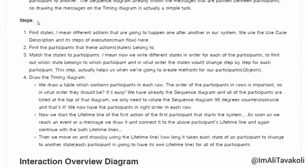Now, what are the steps? The first step is to find states — different actions that are going to happen one after another in our system. We can use the Use Case Description and its main flow. Then find the participants these actions belong to, and match these states to participants. We can use the main flow of the Use Case Diagram to understand what happens step by step so the process can happen successfully.